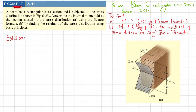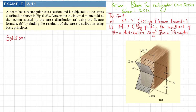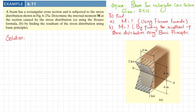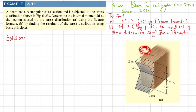Welcome back. Example 6.11. A beam has a rectangular cross section and is subjected to the stress distribution shown in figure 6.25a. Determine the internal moment M at the section caused by the stress distribution using the flexure formula and by finding the resultant of the stress distribution using basic principles. From the figure, the stress distribution shows zero at the neutral axis and maximum stress of 2 ksi. The beam is rectangular with width 6 inch and total height 12 inch.